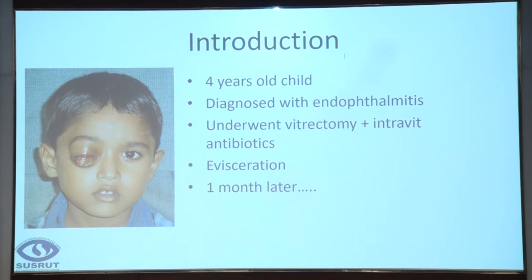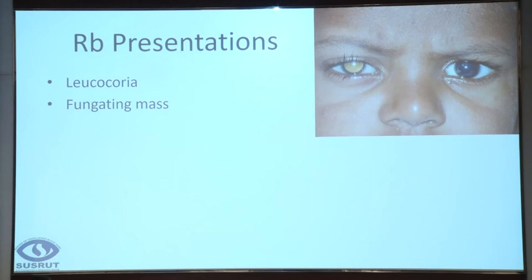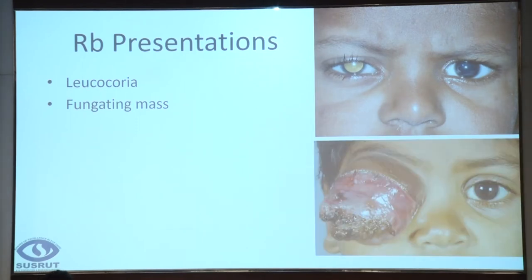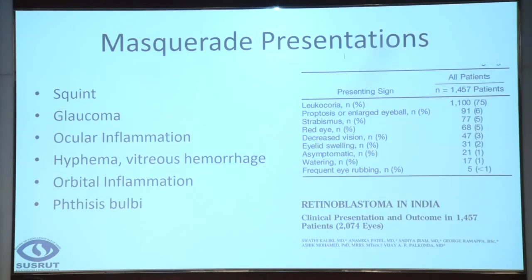It's very heartwarming to see so many people in this hall — earlier we would have three, four, five attendees to an oncology session. Things are getting better. What we usually see as retinoblastoma is leukocoria, of course, though leukocoria could have other causes. The other obvious presentation is a fungating mass. Between these two spectra lie several presentations which are not so easy to diagnose. The LV Prasad group published a very large database showing that leukocoria and proptosis account for about 81%, meaning about one in five retinoblastoma patients present with something else.